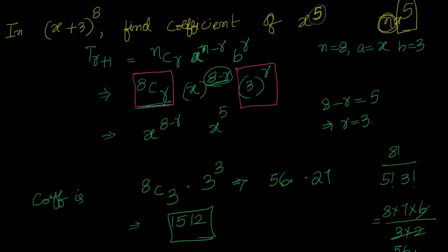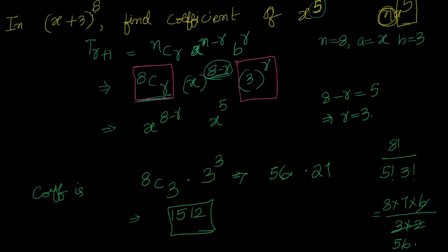Let me repeat that again. We have been given a binomial and told to find the coefficient of x to the power of 5. First, take the generic term and see for which value of r, x will have the power 5. In the generic term it says 8 minus r, so 8 minus r equals 5, giving r equals 3. Once we know r, substitute it back and the remaining values give you the coefficient. That's it.